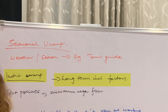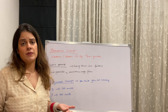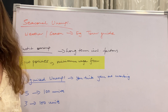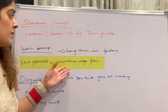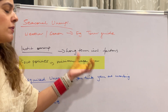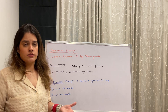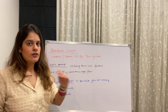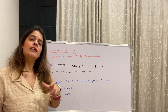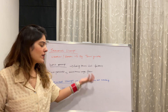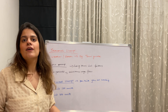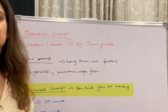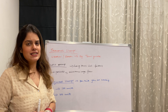Institutional unemployment is caused by long-term institutional factors, often government-related. For example, government policies on labour — such as setting a minimum wage floor — mean that not everyone can meet those requirements or comply with the policies set by the government, and as a result some people remain unemployed.